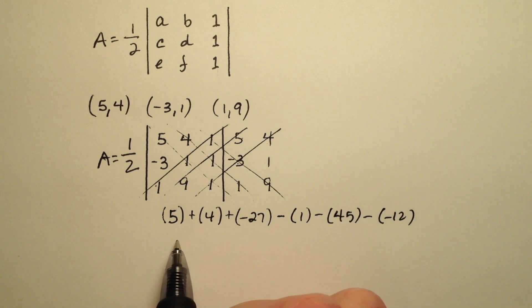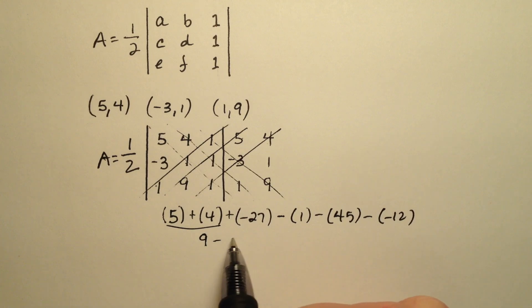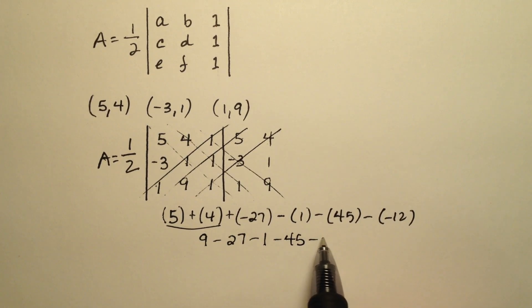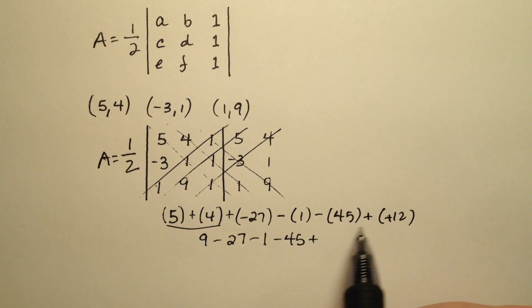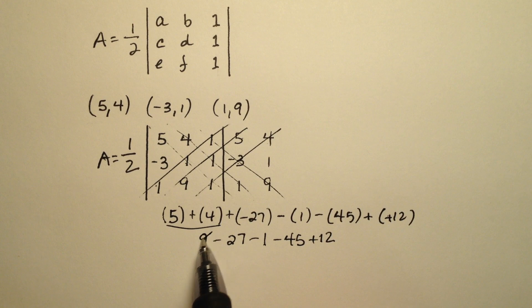So let's go ahead and simplify this. We have a 5 plus 4 makes 9, and I'm just going to rewrite the rest of this: minus 27 minus 1, minus 45, and then plus 12. So we could go ahead and do the numbers we know. 9 and 12 will make 21.